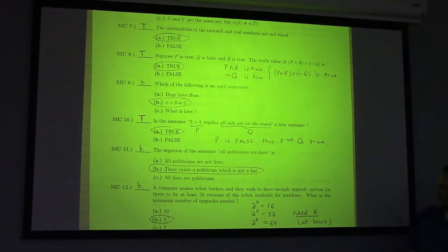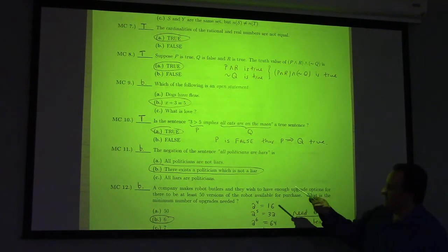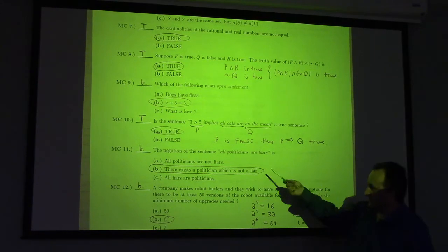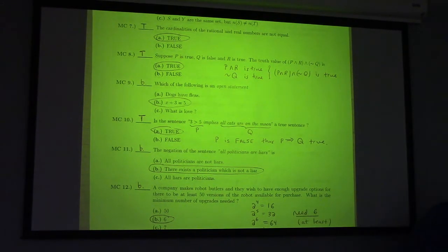11, we understand easier. So, the negation of the sentence, all politicians are liars, is there exists a politician which is not a liar.